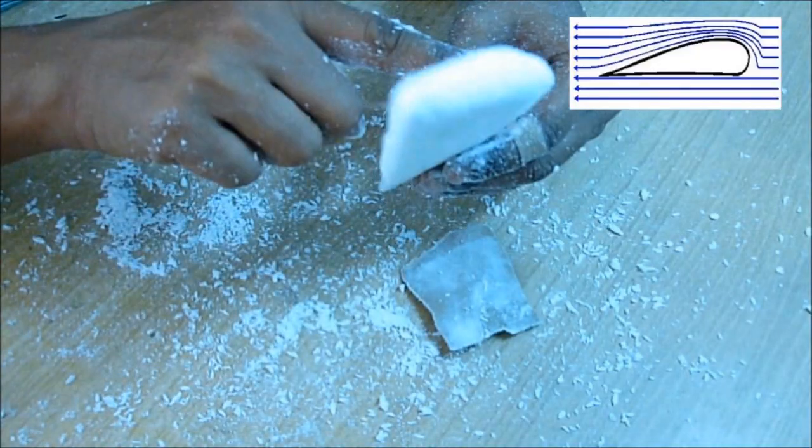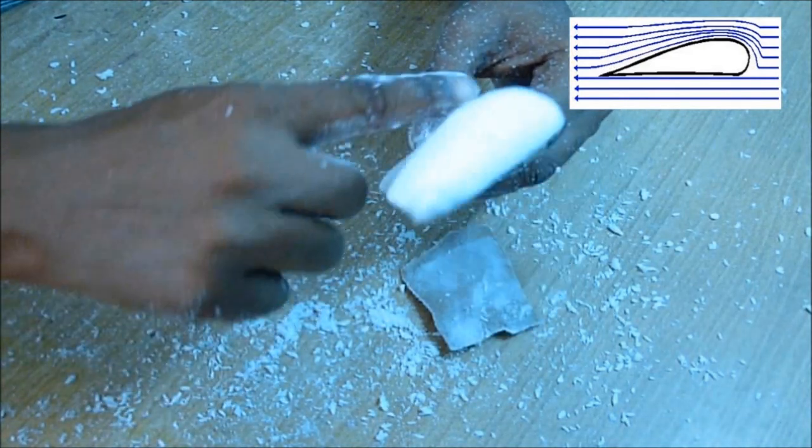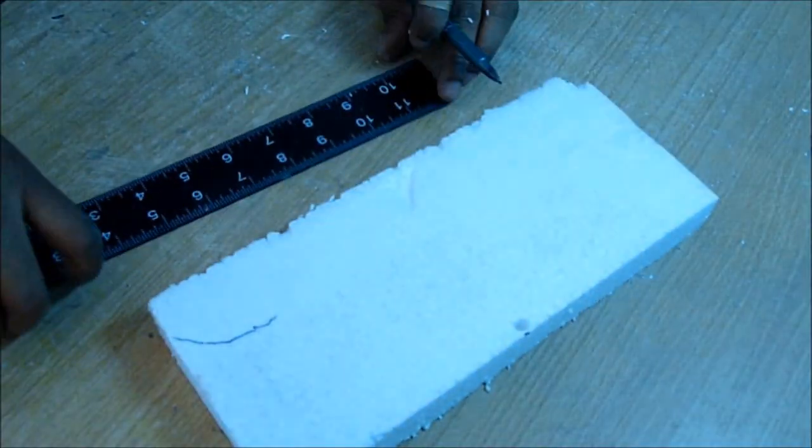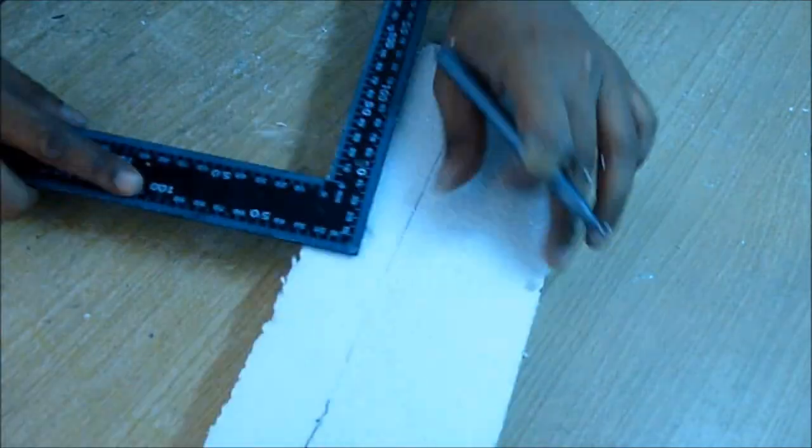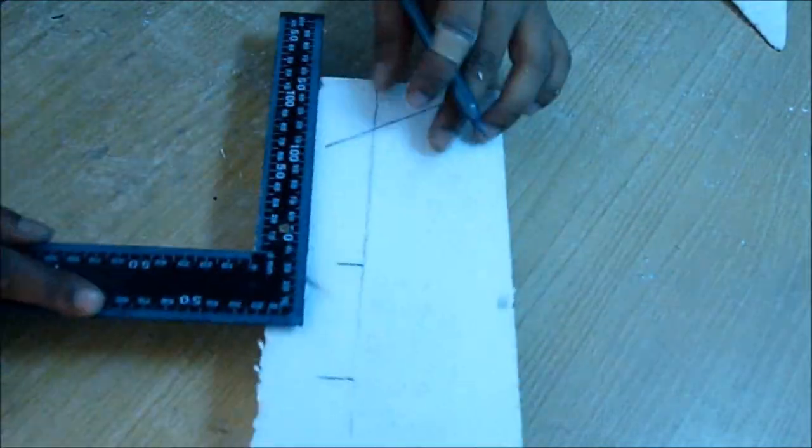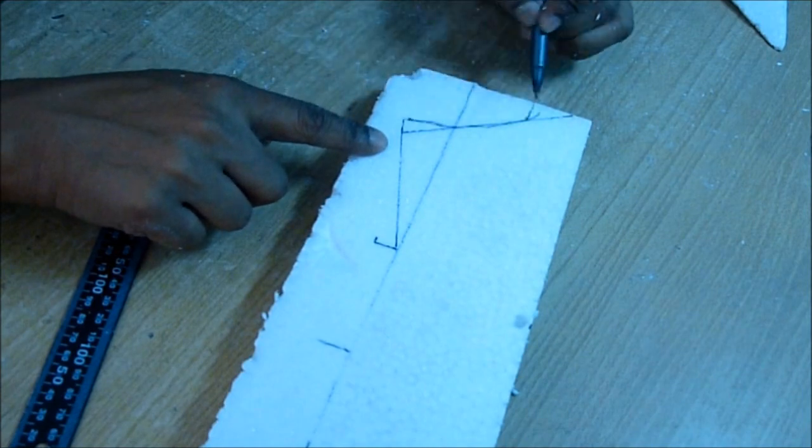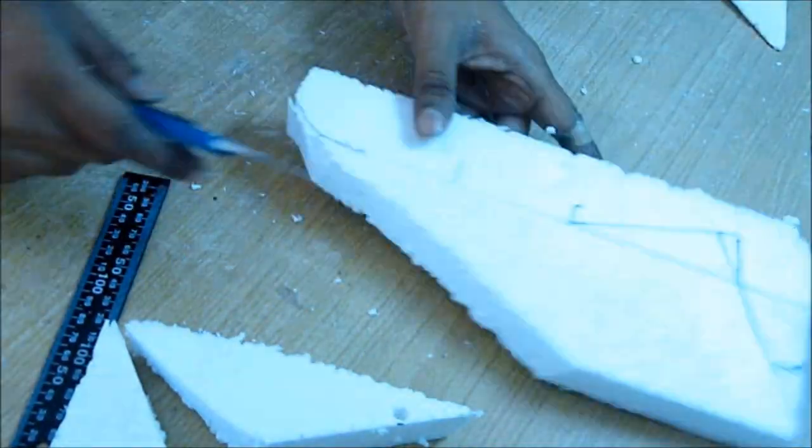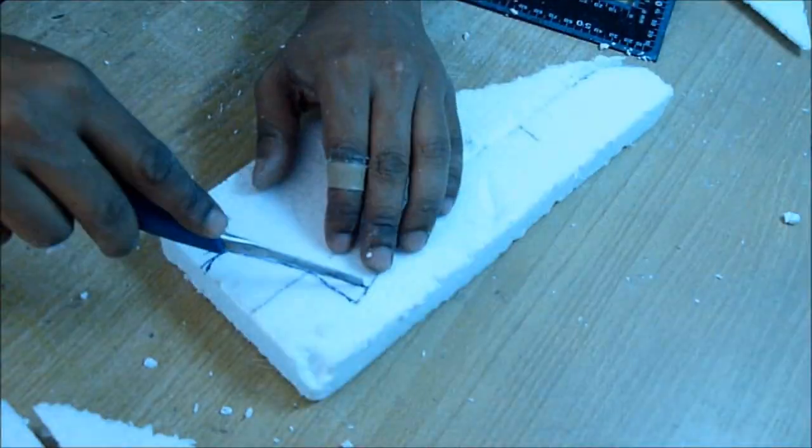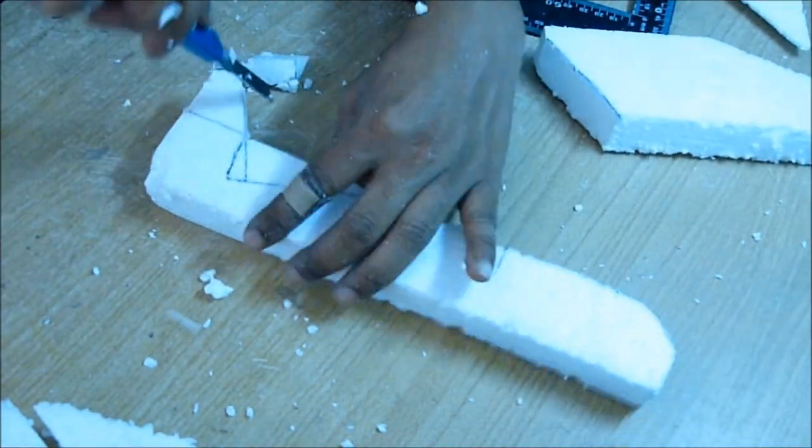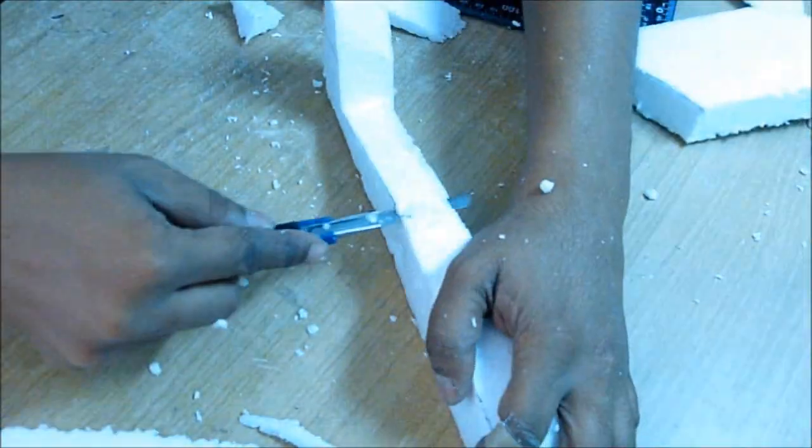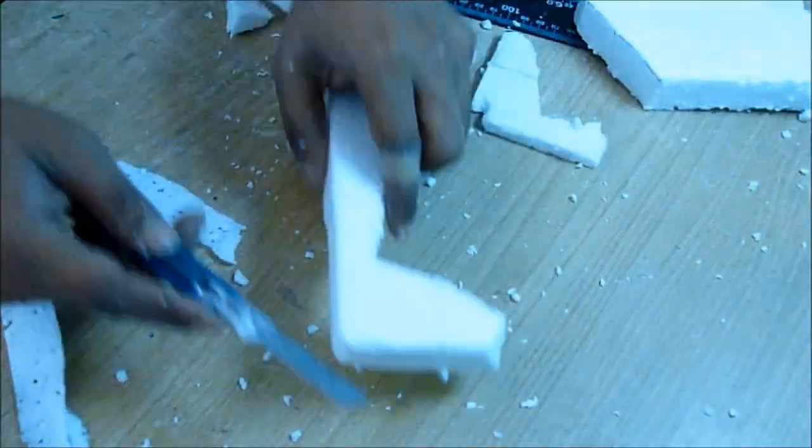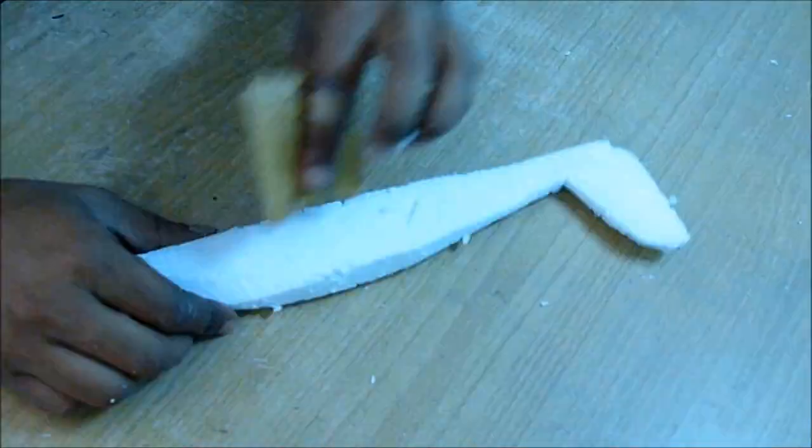Now I'm going to draw the body on the thermocol. Draw the tail part also and using a knife carefully cut the shape out. The stomach part will be thick whereas the tail part will be thin, so cut like that and make it very smooth using sandpaper.